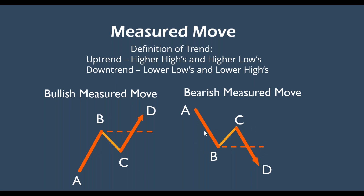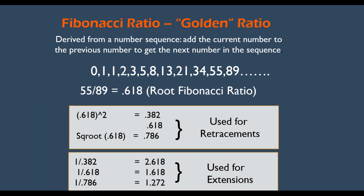Once you see a measured move, you can go ahead and put on a Fibonacci extension, which will help you determine when the trade might be overextended and might be a good time to look at taking profits. The Fibonacci sequence is derived from adding any two numbers to get the next — three plus five is eight, five plus eight is 13, and so forth. If you take the last number divided by the preceding number, you always get the root Fibonacci ratio. Mathematicians then used the square and square root to come up with reciprocals, which I use for extensions to tell me when the move might be overextended.